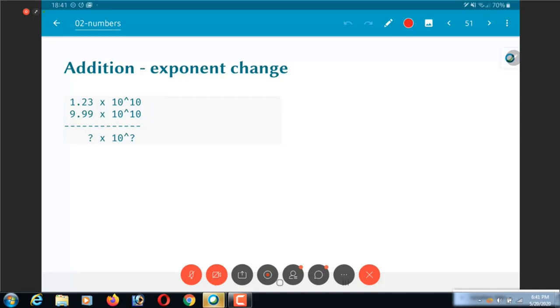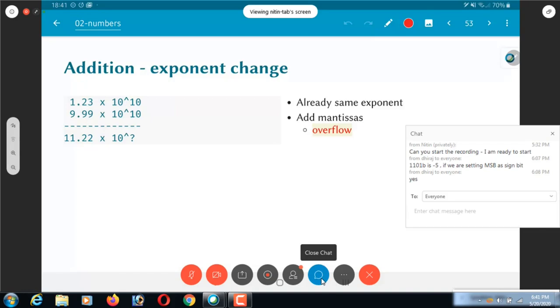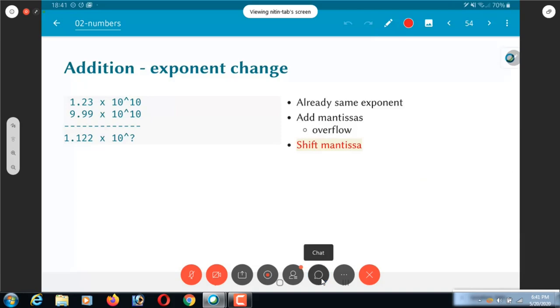What happens if there is an overflow. So I have two values like this 1.23 and 9.99 both into 10 power 10. At the mantissas I end up with 11.22. I can't handle this. So what should I do? Either I can say overflow. But that's not really the case because after all I can handle this range of numbers, 11.22 into 10 power 10 can definitely be handled by the numbers that I have. What I need to do is shift the mantissas so that I normalize it. Then round back to three digits and update the exponent. It now becomes 10 power 11 instead of 10 power 10.